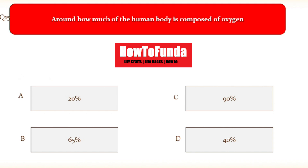Question number fifteen: around how much of the human body is composed of oxygen? Option A 20 percent, option B 65 percent, option C 90 percent, option D 40 percent. The right answer is 65 percent.